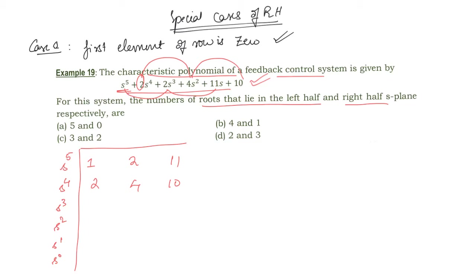Here, 2×2 minus 1×4, divided by 2, becomes 0. So the first element in the third row is 0. The other element, 2×11 minus 1×10 divided by 2, gives 6, and here again you get 0. Since 6 is nonzero, not all elements are zero — only the first element of the row is zero. This is Case 1.